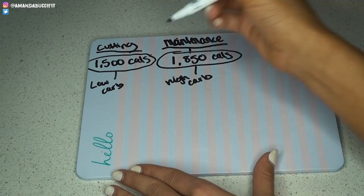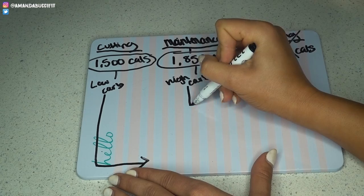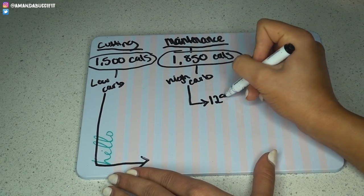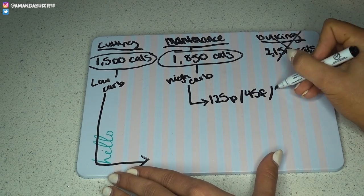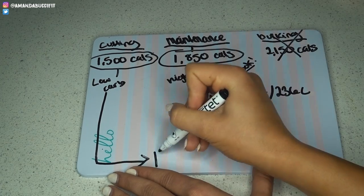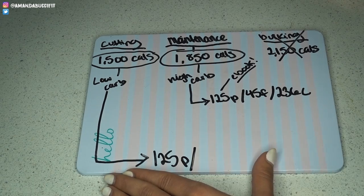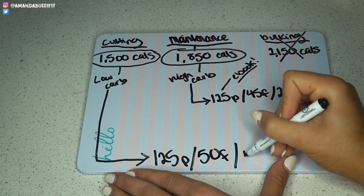So let's take our high carb day numbers. If you are at 1,850 calories, we're going to put 125 grams of protein, 45 grams of fat, and 236 grams of carbs — that all maps out to 1,850 calories. Then your 1,500-calorie low carb days are going to be at 125 grams of protein, 50 grams of fat, and 137 grams of carbs. I have notes that I wrote out here, so we're going to use those numbers as our example carb cycle.